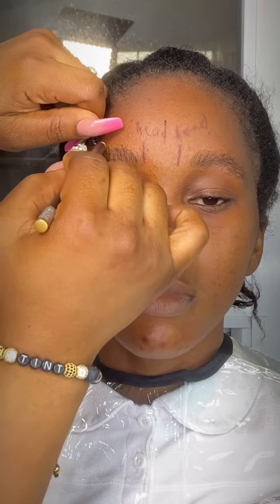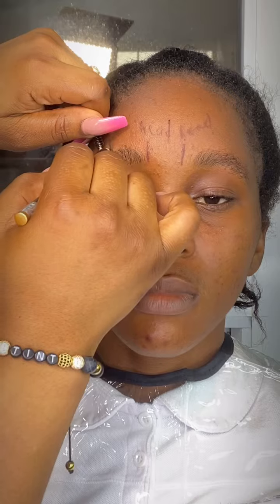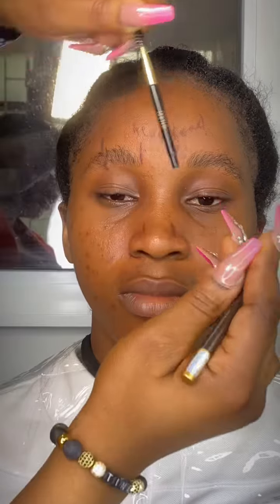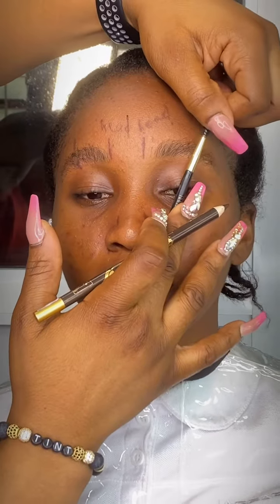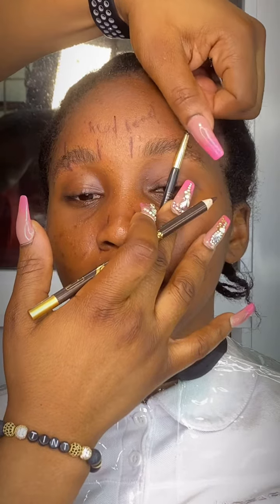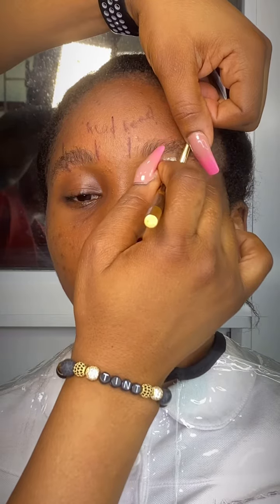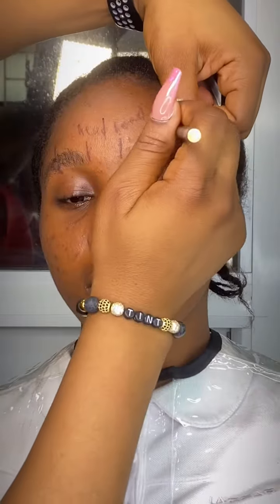I'll measure on the top and above the brows, then the same thing for this side too — the corner of the nose passing through the pupil. Wherever this falls is where the brow is supposed to be at its highest before it starts to descend to this point.